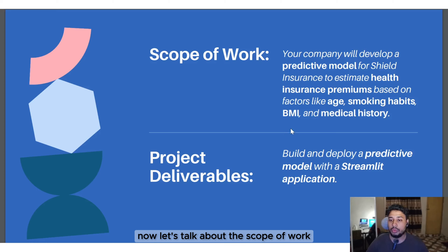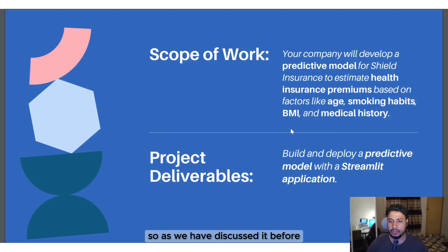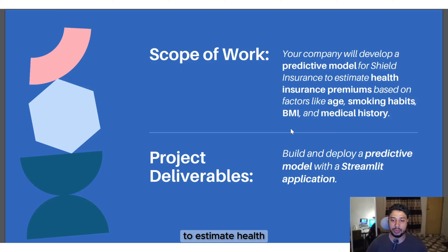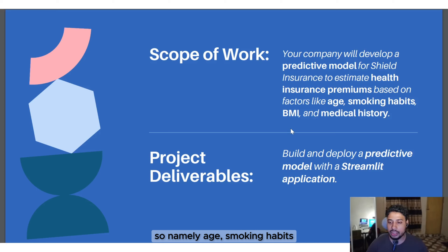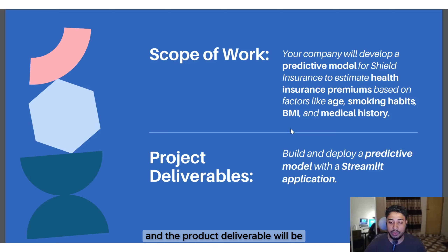Now let's talk about the scope of work. The company will develop a predictive model for Shield Insurance to estimate health insurance premiums based on different factors — namely age, smoking habits, BMI, and medical history. The project deliverable will be a predictive model with a Streamlit application.